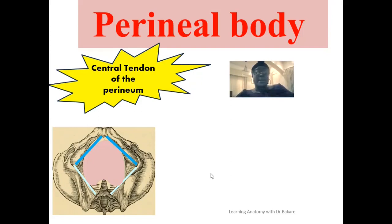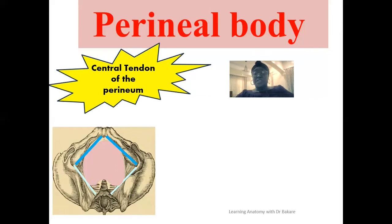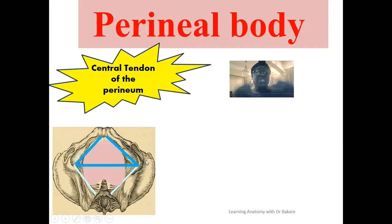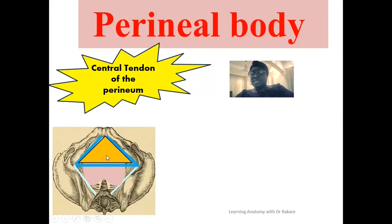Let's use this image to describe where the perineal body is located. The perineum is the region located inferior to the pelvic floor, and this is the inferior view of the pelvic cavity presenting a diamond-shaped configuration. This diamond shape is subdivided into two triangles by an imaginary line running from one ischial tuberosity to the other, highlighted in blue.